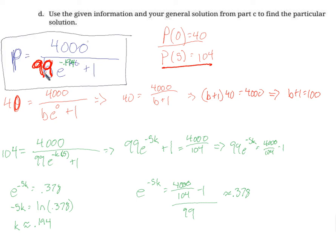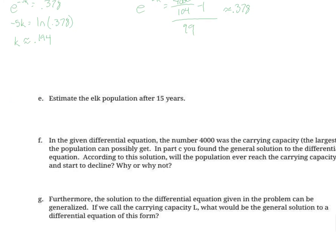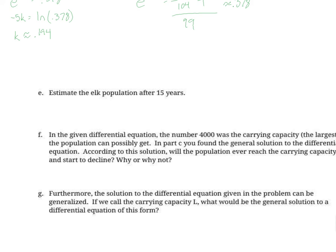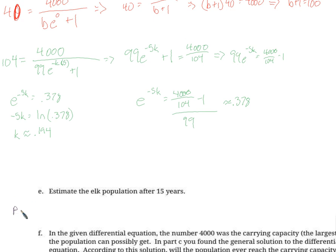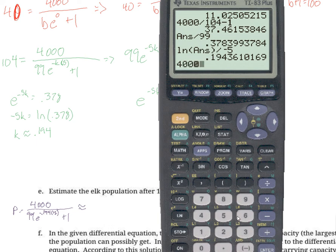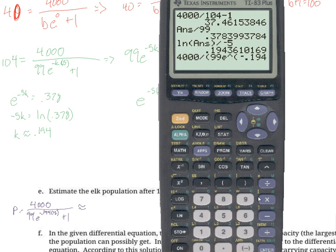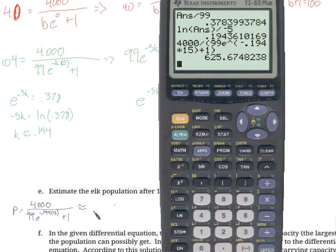If I want to know how big the population is, I can use this equation here, which is what we want to do down here. After 15 years, we're just going to plug 15 into that equation there. Population equals 4000 over 99 times e to the negative 0.194 times 15 years plus 1. And we calculate, 4000 divided by this quantity, 99 times e to the negative 0.194 times 15 power, and we're going to add 1 to that. That's our denominator. 625.67 elk.